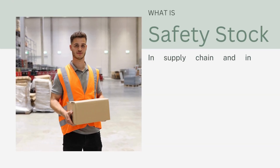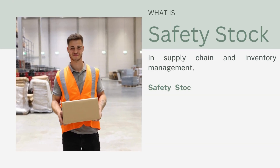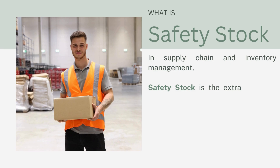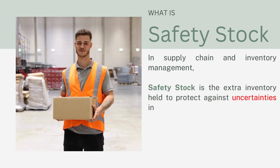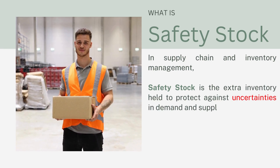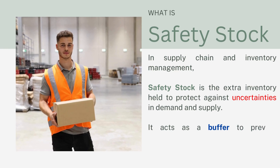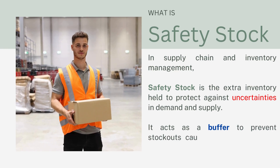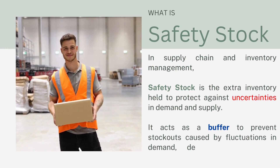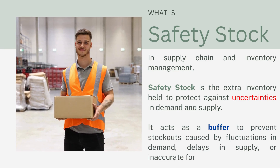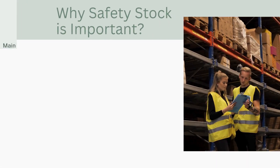What is safety stock? In supply chain and inventory management, safety stock is the extra inventory held to protect against uncertainties in demand and supply. It acts as a buffer to prevent stock outs caused by fluctuations in demand, delays in supply, or inaccurate forecasting.